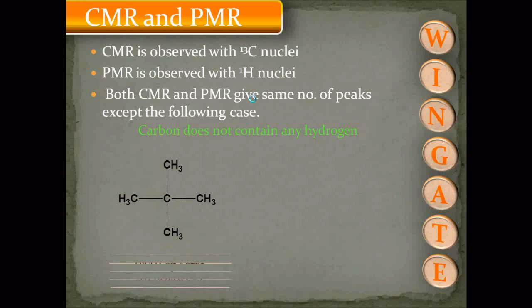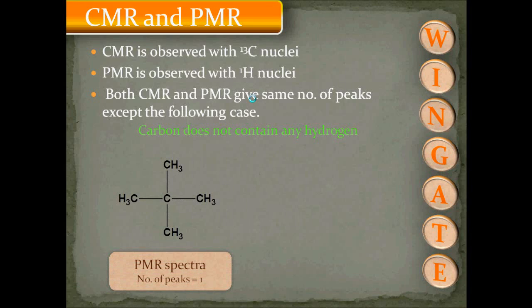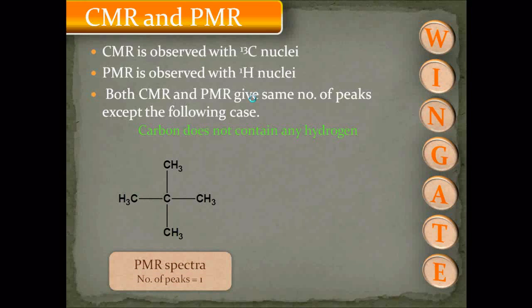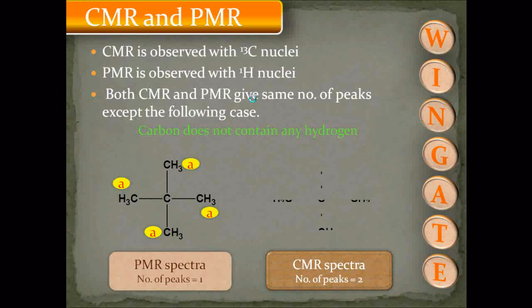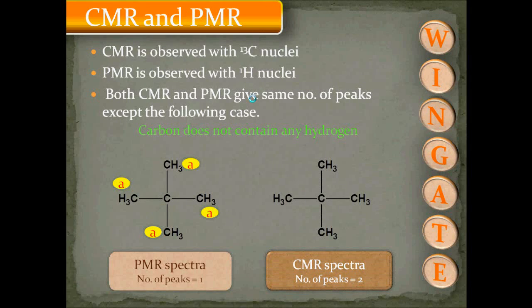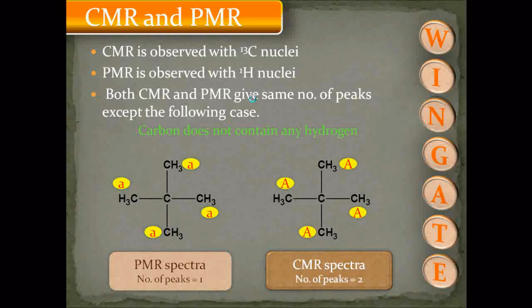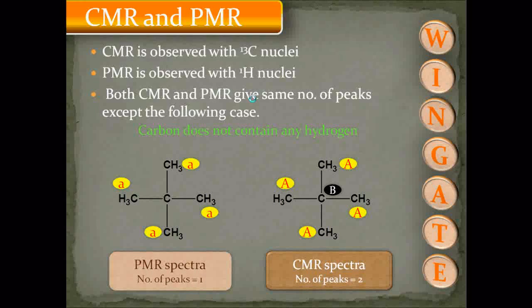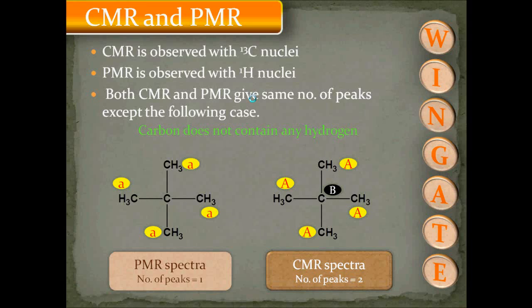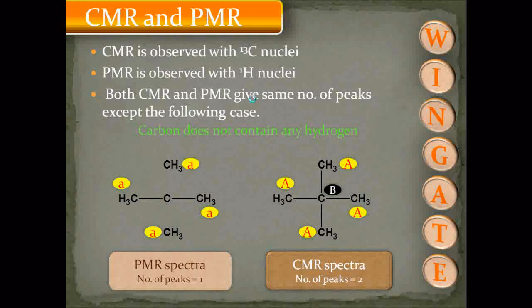In this given example, the PMR spectra will show 1 peak — the protons indicated by A are magnetically equivalent and give 1 PMR signal. The CMR spectra for the same molecule will show two peaks: the carbon nuclei indicated by A give one signal, and the carbon nuclei indicated by B give another signal, because that carbon is not bearing any hydrogen, giving one extra peak in the CMR spectra.